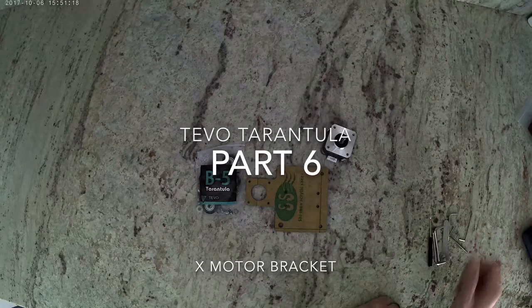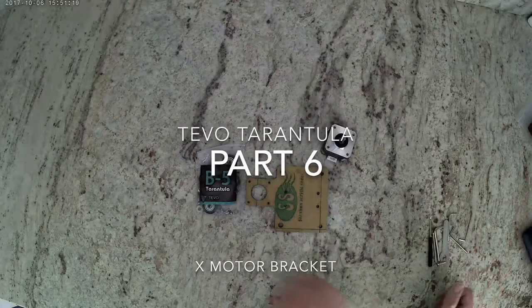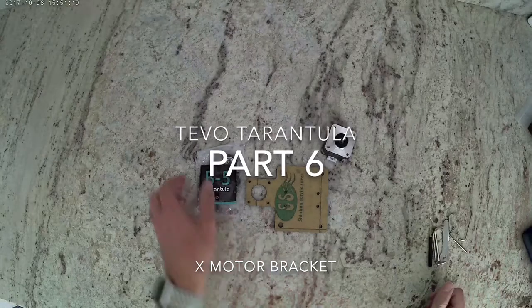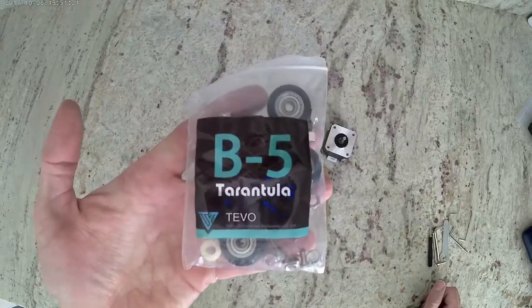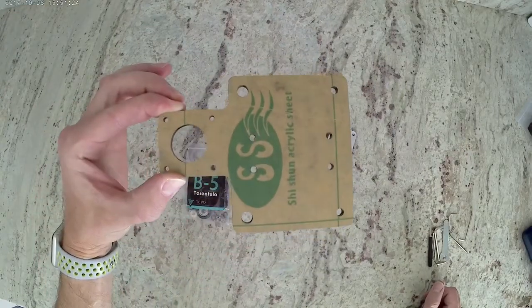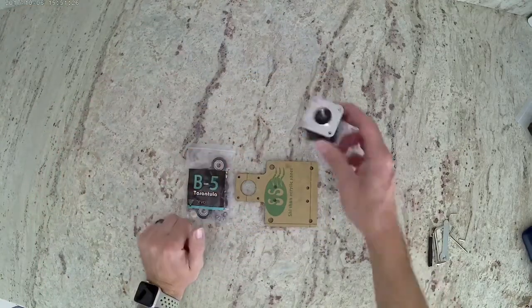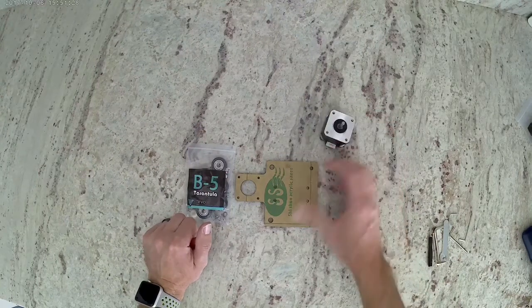This is Colin with Maker Farm. This is part 6 of the TiVo Tarantula build. In this one we're going to do the X motor bracket. Go ahead and grab bag B-5, grab your acrylic piece that looks like this, we're going to need a motor, and then we're going to need your tool bag as well.